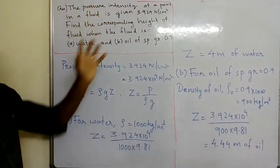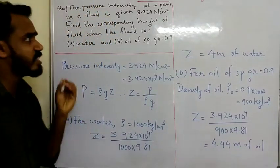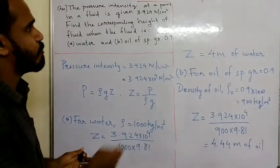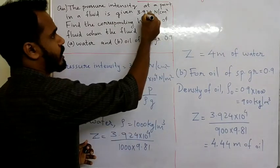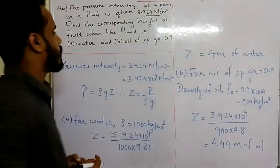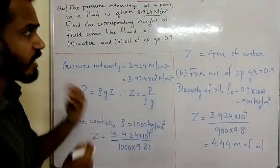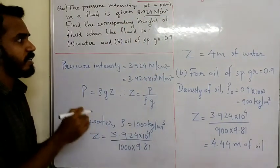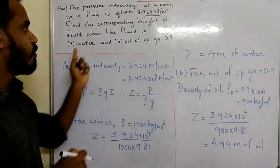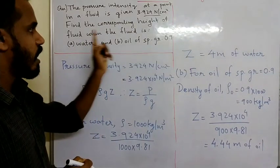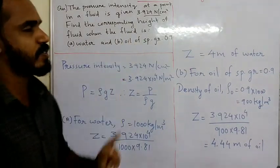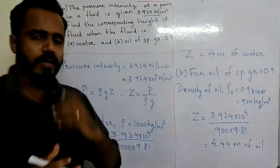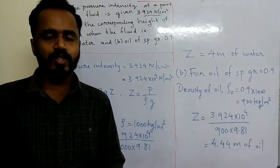Next problem: the pressure intensity at a point in a fluid is given as 3.924 N/cm². Find the corresponding height of the fluid when the fluid is water, and when it is oil of specific gravity 0.9.